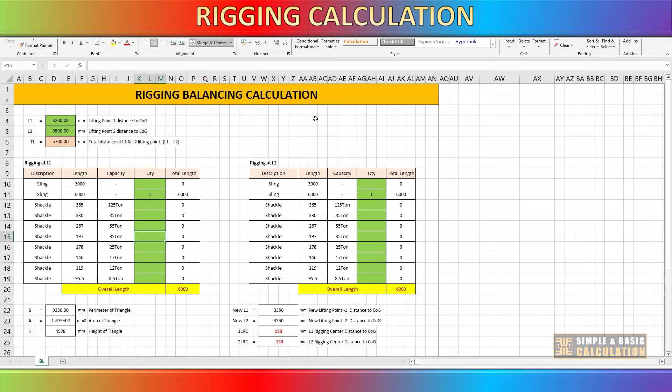According to the AutoCAD drawing, there is a 150mm offset in the rigging center line when using the same length of rigging for both lifting points. The value in the spreadsheet corresponds to the value in AutoCAD. It will also show how much the cargo will tilt during lifting.